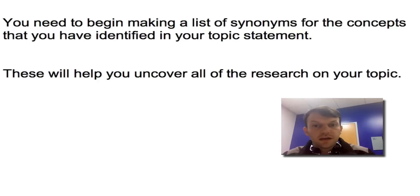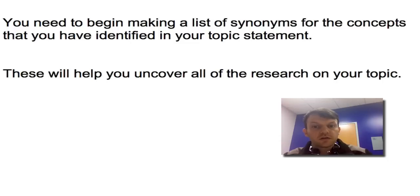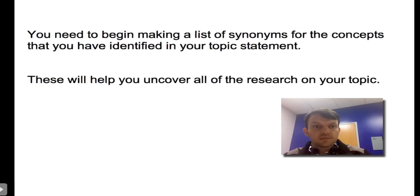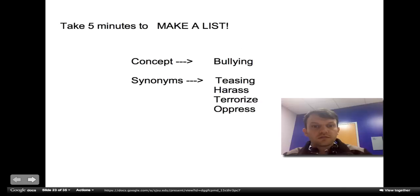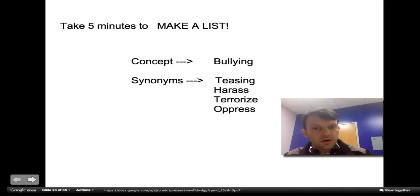Next, you will need to begin making a list of synonyms for the concepts that you have identified in your topic statement. These will help you uncover all of the research on your topic. Using our concept of bullying, we would generate a list of synonyms. For bullying, some other ways of talking about bullying would be teasing, harassing, terrorize, or oppress.